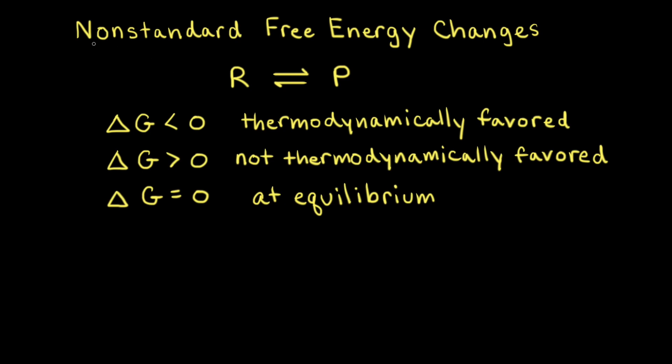Understanding the concept of non-standard free energy changes is really important when it comes to a chemical reaction. For this generic chemical reaction, the reactants turn into the products, and non-standard free energy change is symbolized by delta G — notice this delta G doesn't have the naught superscript, and therefore it's non-standard change in free energy. By calculating the non-standard change in free energy, we can figure out which direction the net reaction will proceed.